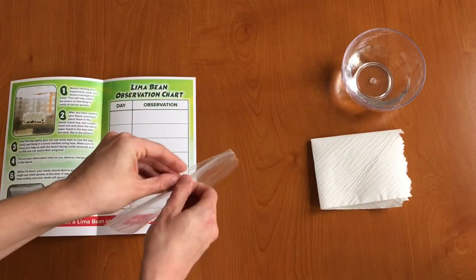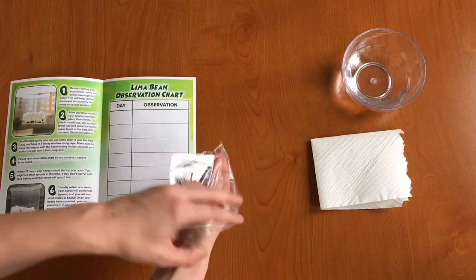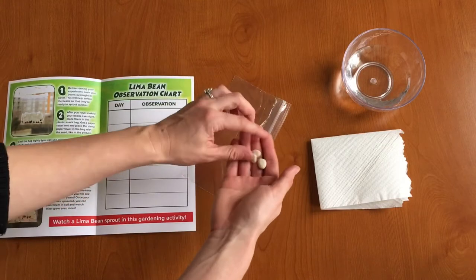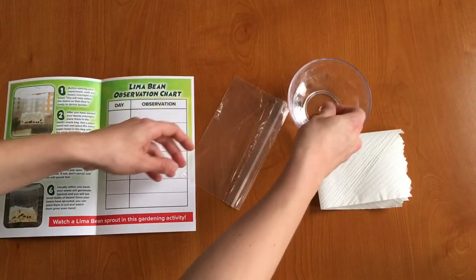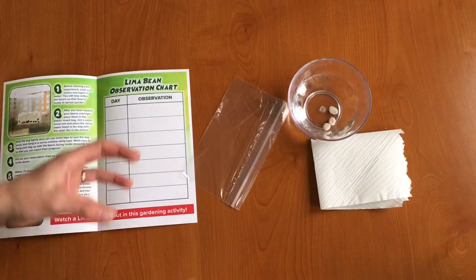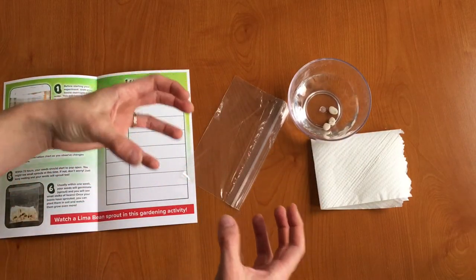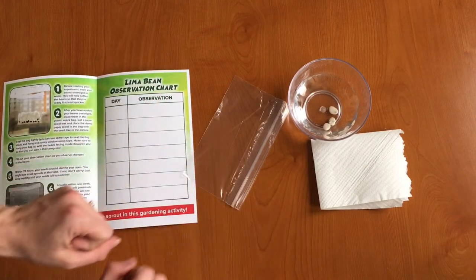Our first step is to open up our baggie and get out our lima beans and we're going to put our lima beans in a bowl of water overnight. One, two, three, and that will help the lima beans soak up some water and get ready to open up and sprout so that they can have their roots come out.